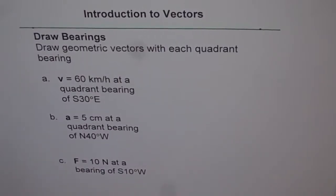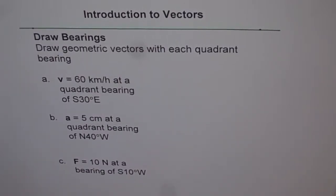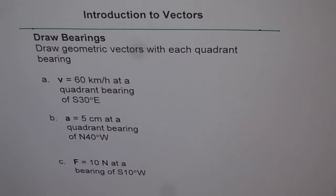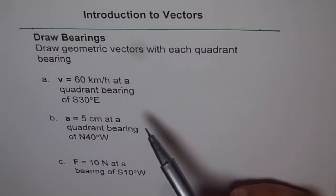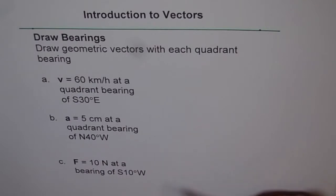Introduction to vectors. As you know, vectors have two components: one is magnitude and the other one is direction. Now here we are trying to understand how to represent the direction of a vector. We have a few examples on bearing angles, and one of them — quadrant bearing — is what we are going to discuss in this video.